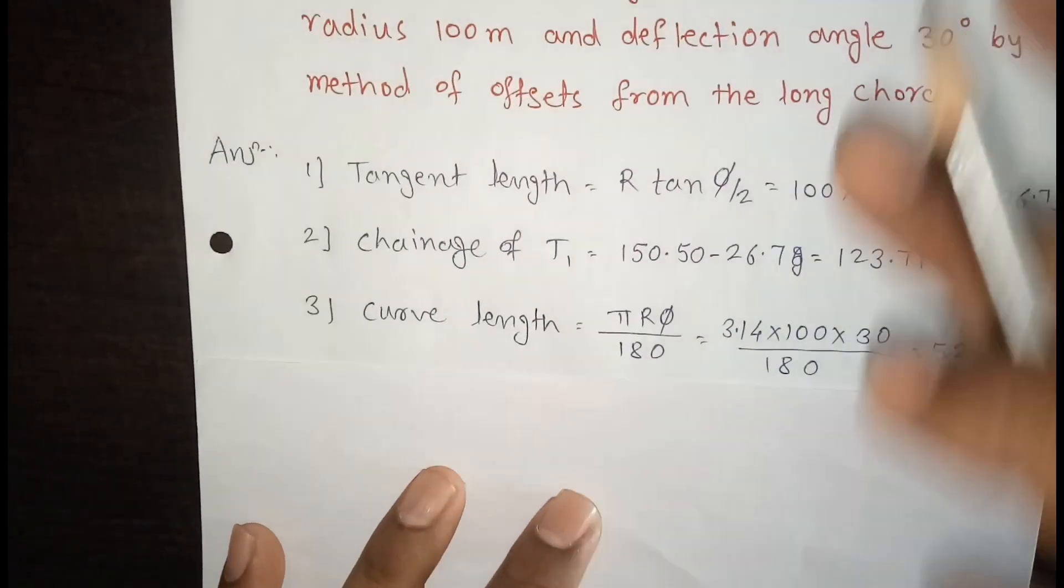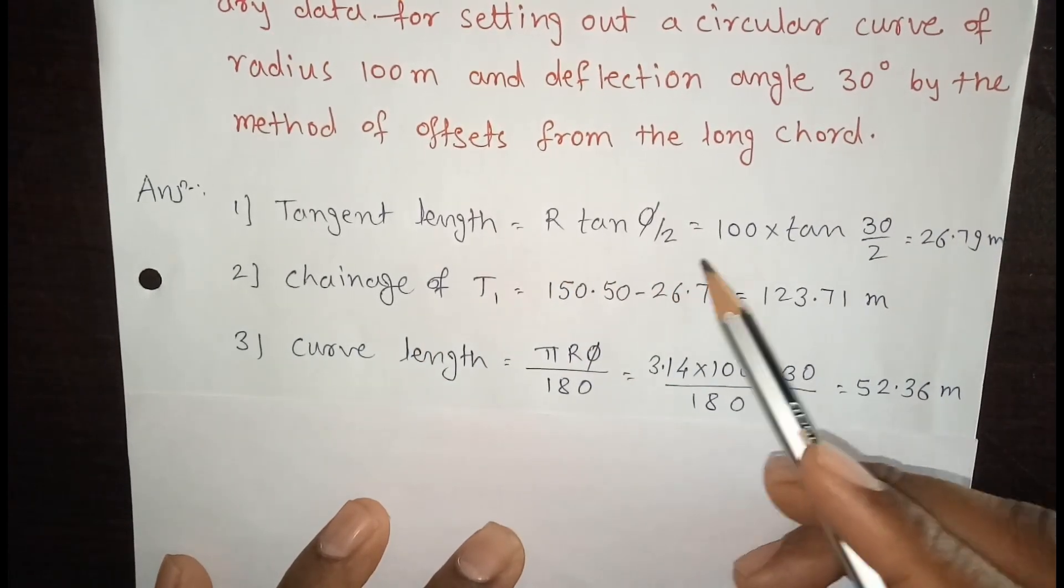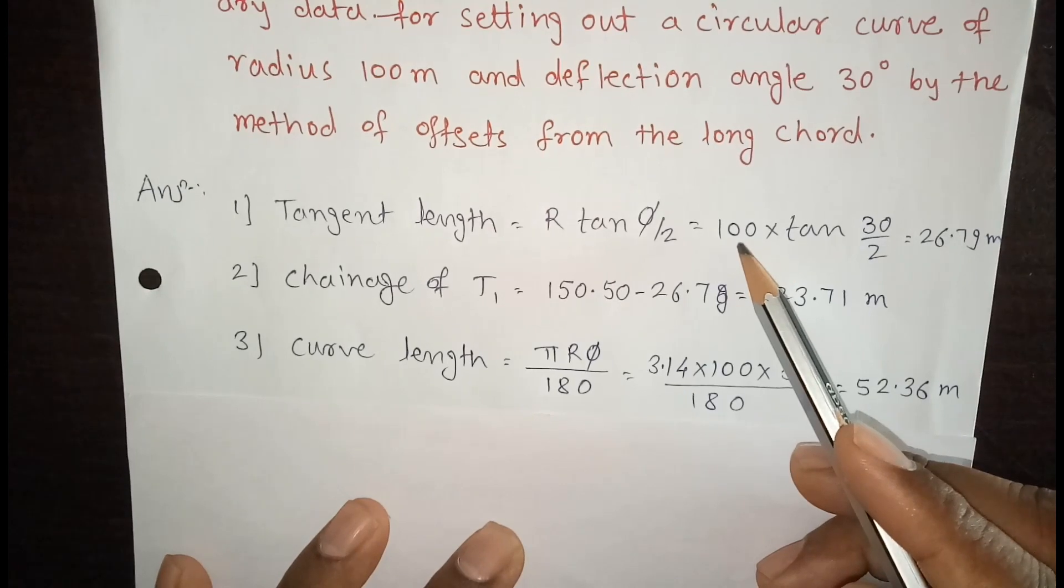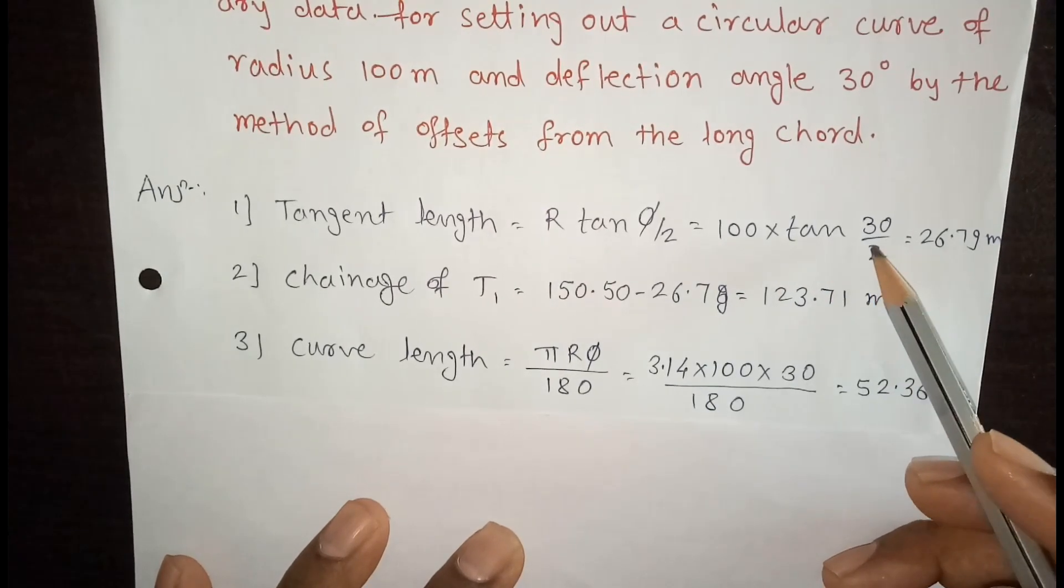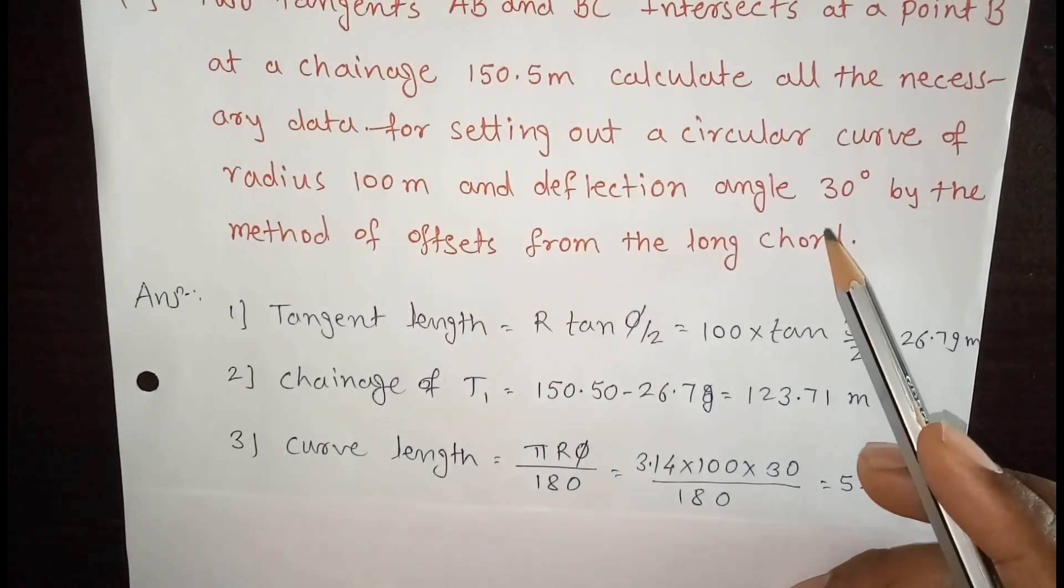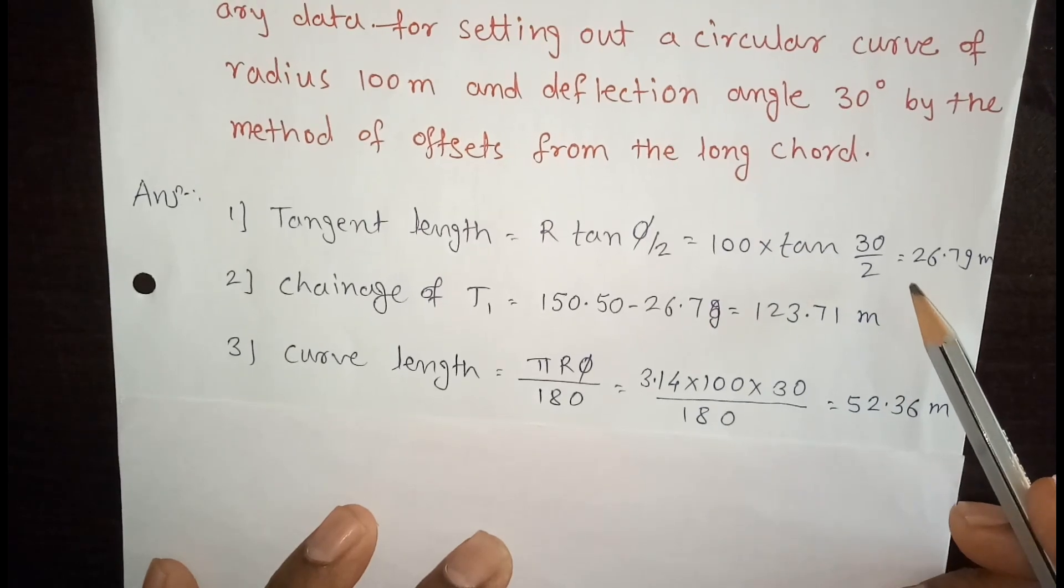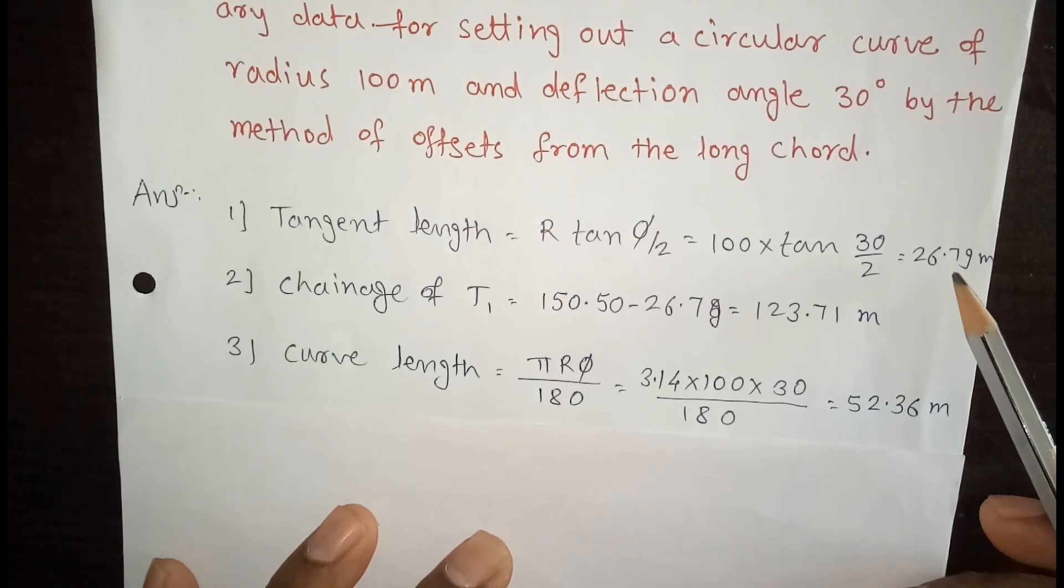First step is tangent length. We know that the formula for tangent length is R tan φ by 2. R is the radius and φ is the angle of deflection. This is the deflection angle that is 30 degree and radius is 100 meter. So 100 into tan 30 by 2, so tangent length is 26.79.